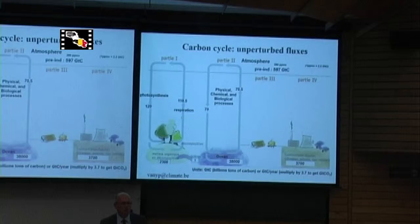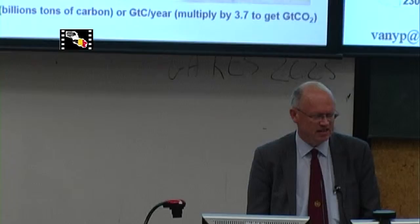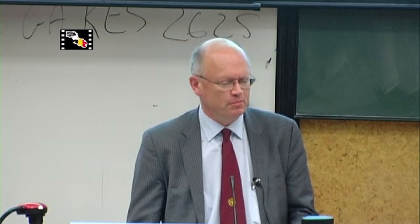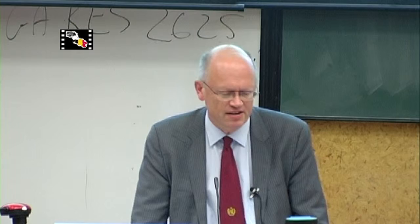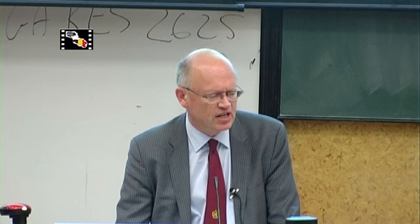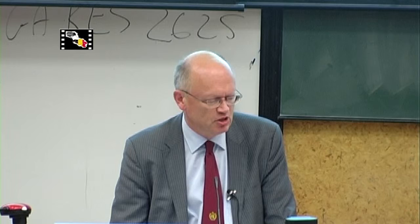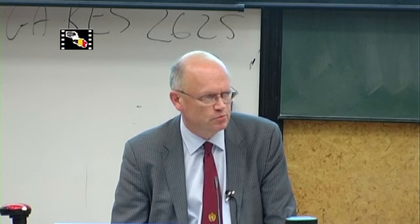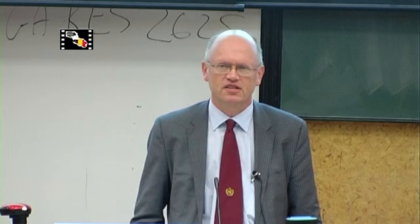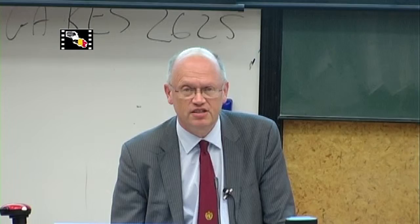We have succeeded, involuntarily, in unbalancing the carbon cycle, which was pretty much balanced. Behind the carbon cycle there are two big loops. One loop shows exchanges between soil, vegetation, and the atmosphere — labeled in gigatons of carbon per year — with emission through respiration and organic matter decomposition of approximately 120 gigatons per year. A gigaton is a billion tons.